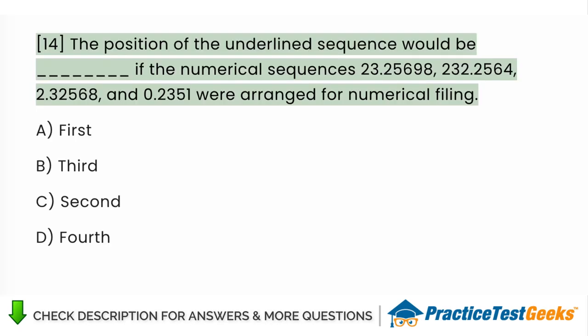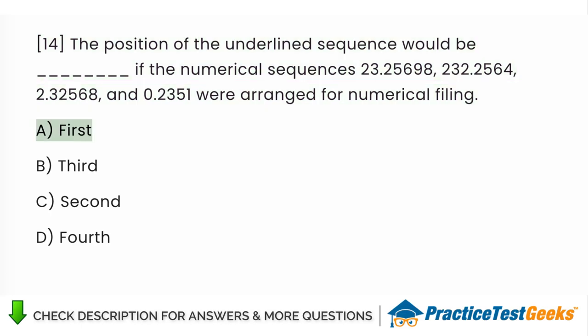The position of the underlined sequence would be if the numerical sequences 23.25698, 232.2564, 2.32568, and 0.2351 were arranged for numerical filing A. First B. Third C. Second D. Fourth